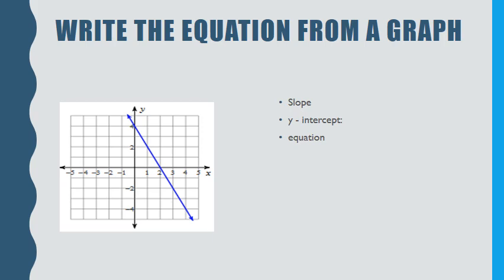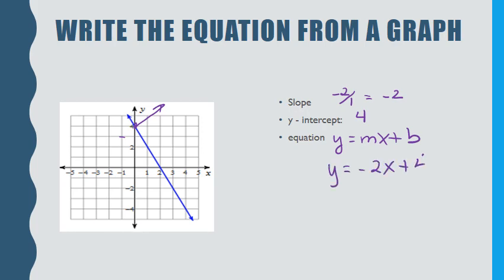For this example, starting at one point, I go negative two over and positive one, so the slope is negative two over one, or negative two. The y-intercept, where the line crosses the y-axis, is at four. Substituting into y equals mx plus b gives us y equals negative two x plus four.